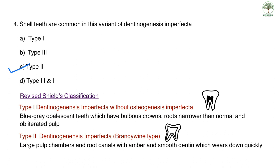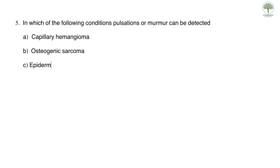Question five: in which condition can pulsations or murmur be detected? Options are capillary hemangioma, osteogenic sarcoma, epidermoid carcinoma, and osteoid osteoma. The correct answer is B, osteogenic sarcoma. However, pulsations or murmur are not pathognomonic for any of the four lesions, so we will also arrive at the answer by elimination.